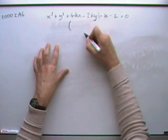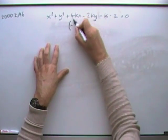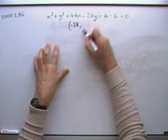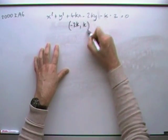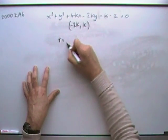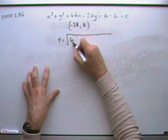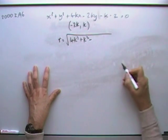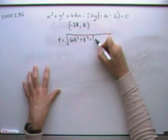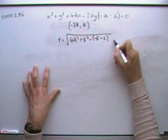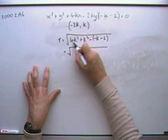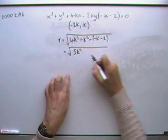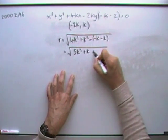So for this one, I can identify the center readily, because it will just be negative the half of that, and negative the half of that. And then from that, I can get the radius, because that would be the square root of those things squared, take away the number at the end. So let's take away a negative k minus a 2. I've tidied that up: 4 and 1, so that's 5k squared plus k plus 2.